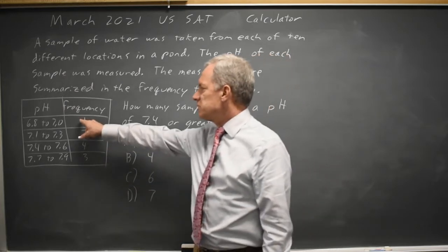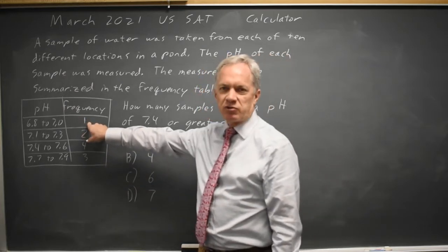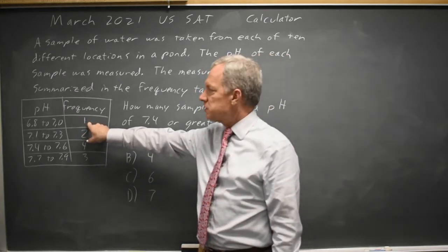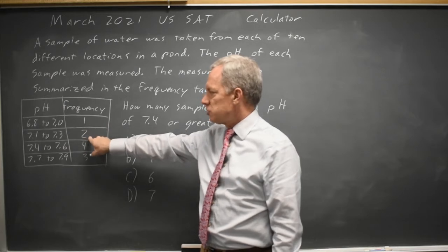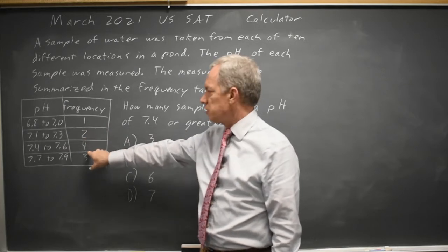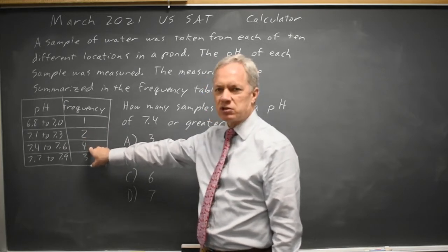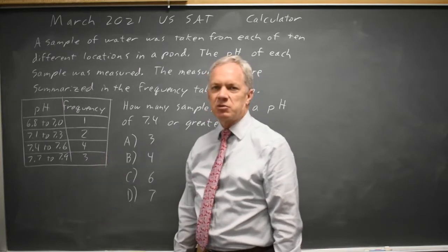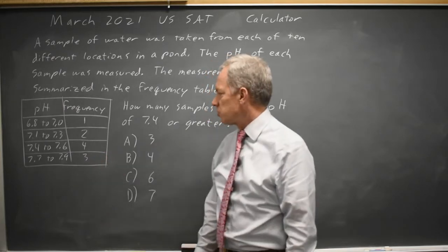The number of observations in each interval is the frequency shown here. So there was one that was 6.8 to 7, two that were 7.1 to 7.3, four that were 7.4 to 7.6, and three more that were 7.7 to 7.9.